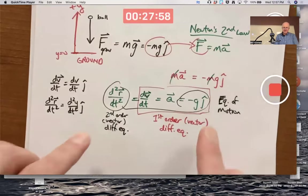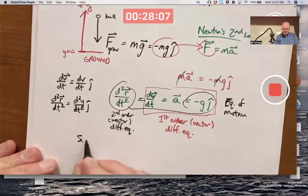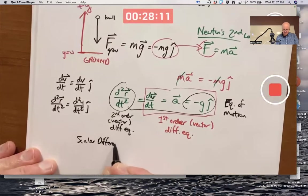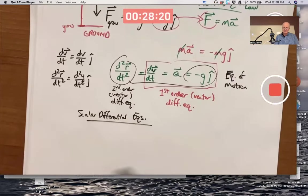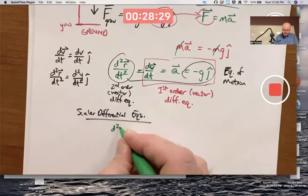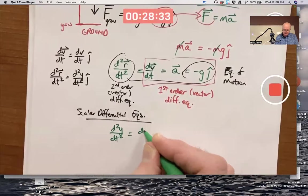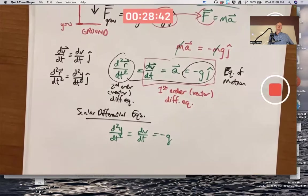Using those conventions, I can effectively get rid of the J-hat. I can convert these vector equations to scalar differential equations. I can write the second derivative of Y with respect to T equals the first derivative of V with respect to T equals negative G. I got rid of the J-hat, got rid of the vector symbols, and changed the R to a Y. I can do that if it's one-dimensional motion.